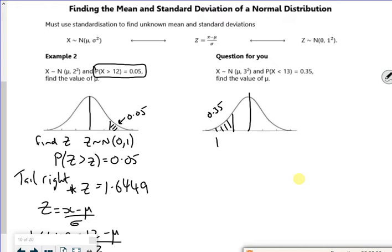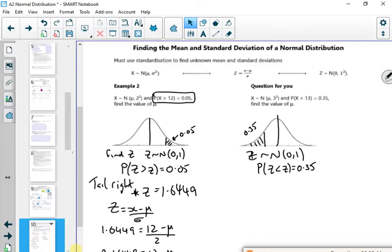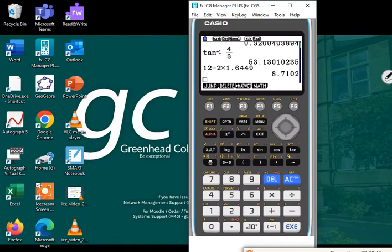So I'm going to do an inverse normal. I'm going to switch it to the standardized, where the probability z is less than z is 0.35. Right, so the board keeps doing the wrong thing. Oh, it's driving me nuts.